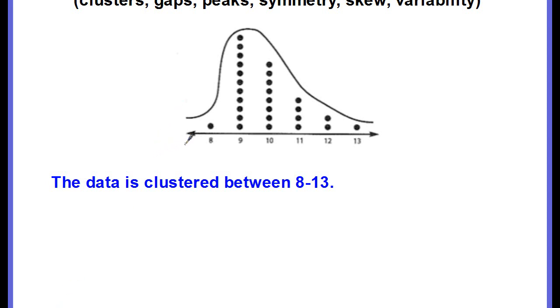Alright, so talking about the clusters, you can see that the clusters with the data, each dot represents a piece of data, that they're all clustered together. So you could just say the data is clustered between 8 and 13.